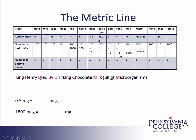If we take just the abbreviation for each prefix, we get our metric line. So while reciting 'King Henry died by drinking chocolate milk full of microorganisms,' we can write those prefixes down, and then use this metric line to solve problems.